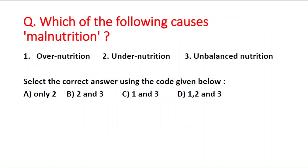Next question: which of the following causes malnutrition? First is over-nutrition, second is under-nutrition, and third is unbalanced nutrition. The correct answer is option B — under-nutrition and unbalanced nutrition cause the problem of malnutrition.